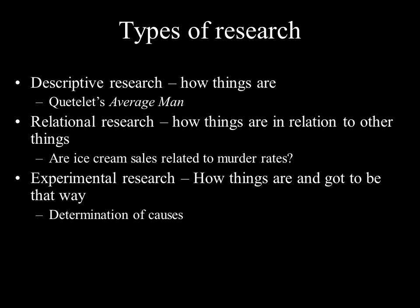The second kind of research is called relational research, which is about how things are in relation to other things. This is also known as correlational research, because it uses a statistical technique called correlation, which studies the relationship between two variables. For example, the relationship between ice cream sales and the crime rate is a good example of relational research, where you're studying the relation between variable X and variable Y.